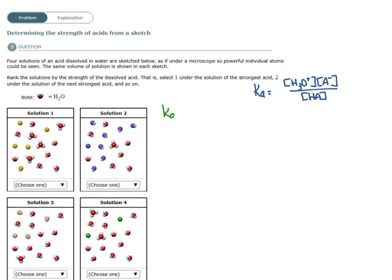And let's do solution one. H3O plus are the ones that have four atoms. So there's one, two, three, four. And A minus is the ones that have only one atom. One, two, three, four. And HA is the one that has only two atoms. One.